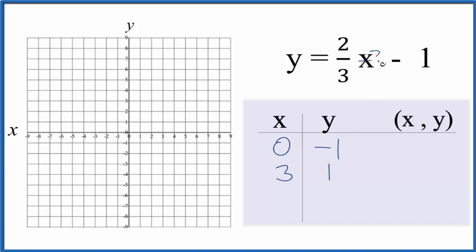Likewise, if we put negative three in for x, two-thirds times negative three is negative two. Negative two minus one gives us negative three. So these are the points we'll graph for the equation y equals two-thirds x minus one. Let's go.